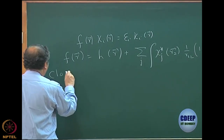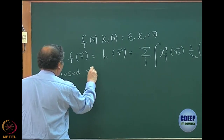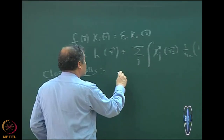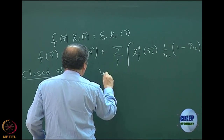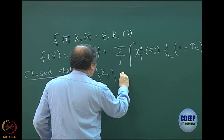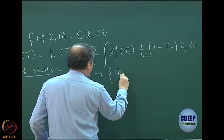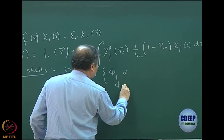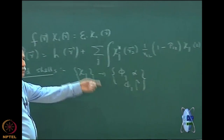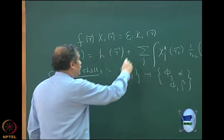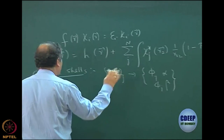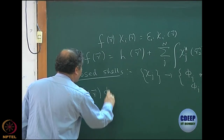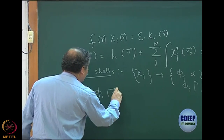Then we went to the closed shell. We want to give a quick summary to this point, where we expanded — we wrote chi_j of r as phi_j*alpha and phi_j*beta — so we have n/2 sets now instead of n. Remember this was n; now we have n/2 sets. Then we had an expression for the Hartree-Fock equation which is very similar but only for the space orbitals.